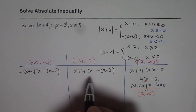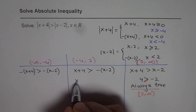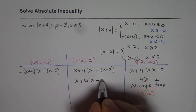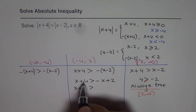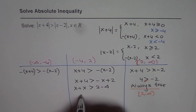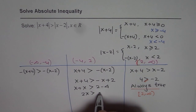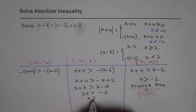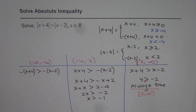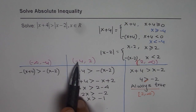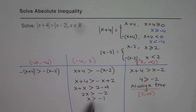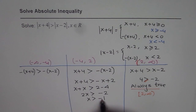Now solving in the interval between minus 4 and 2: x plus 4 greater than negative x plus 2. Bringing x to the left gives x plus x greater than 2 minus 4, so 2x is greater than minus 2, meaning x is greater than minus 1. Since minus 1 lies within the interval from minus 4 to 2, the solution here is x greater than minus 1.